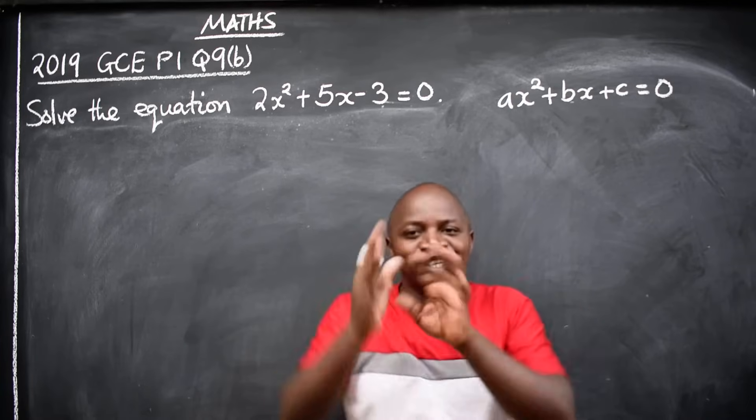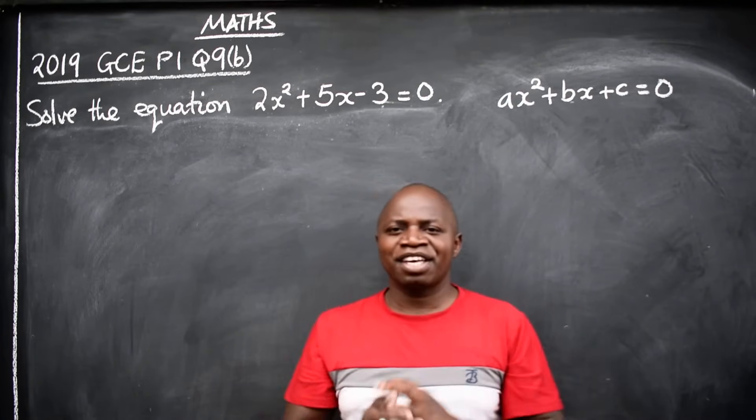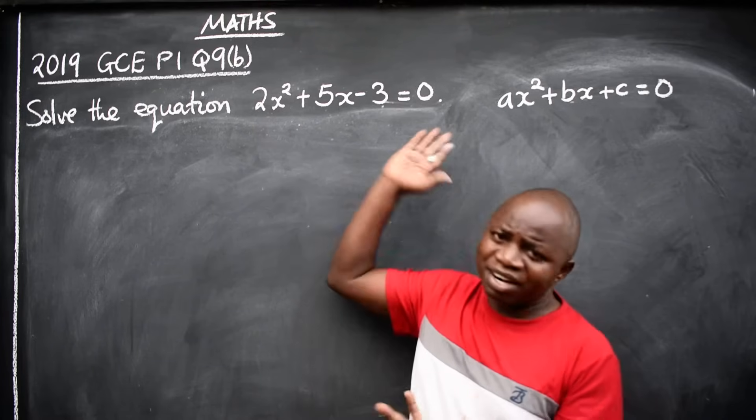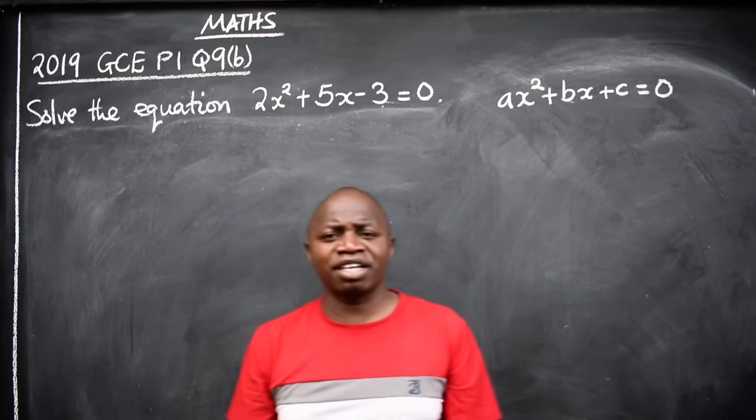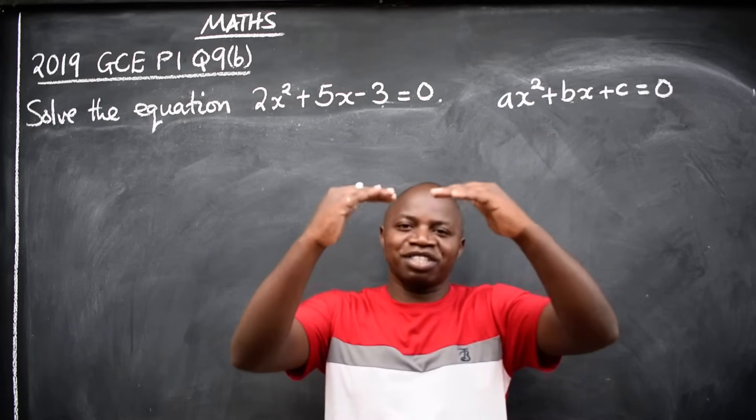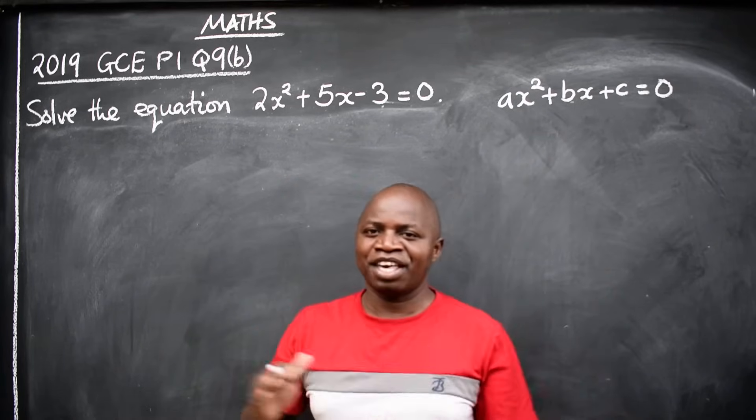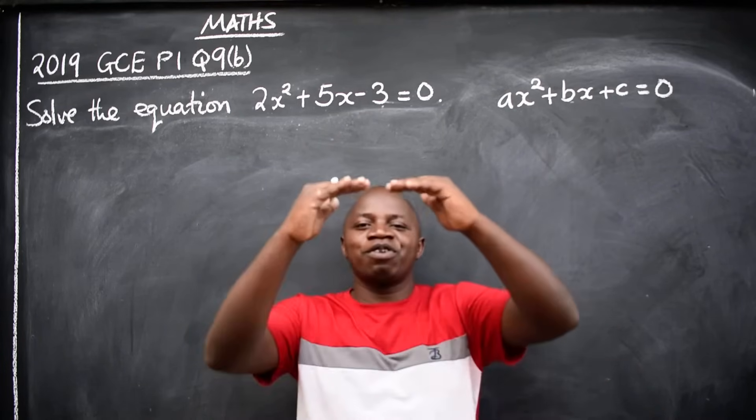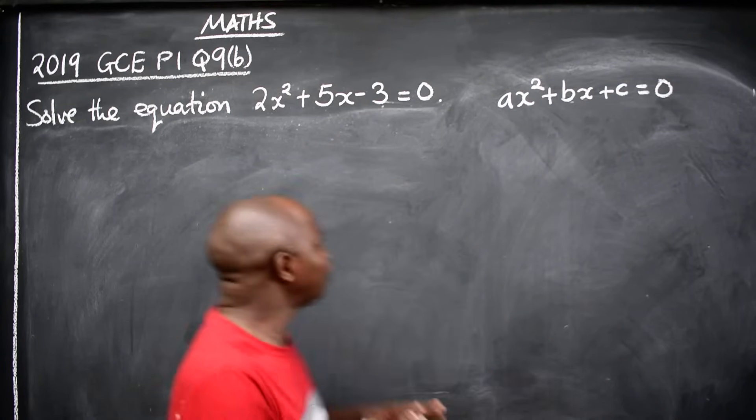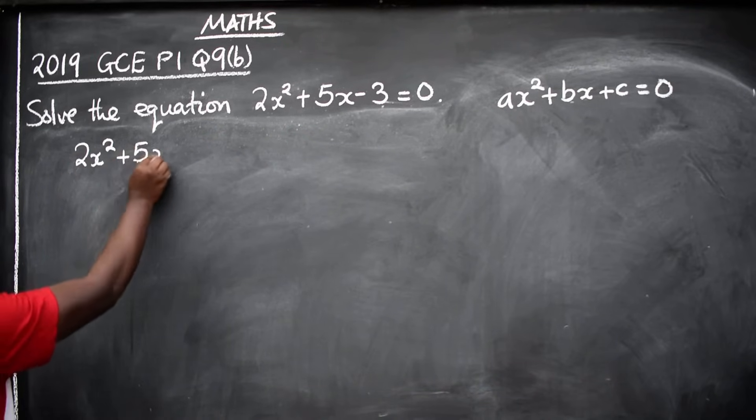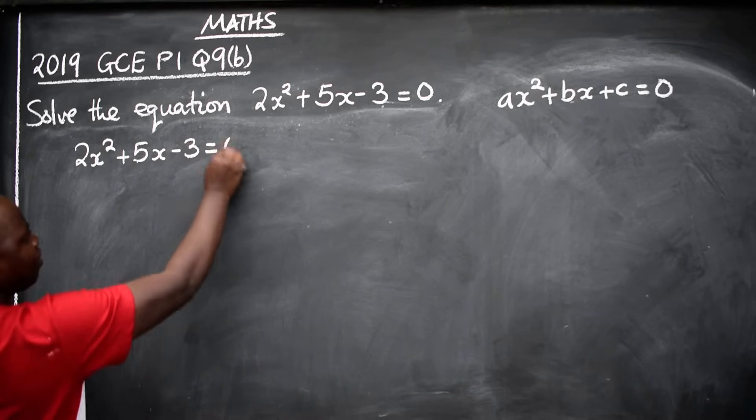It is not always that in an exam test the teacher will give you this quadratic equation in this form. Sometimes they may twist it. So if they twist it, the first step you are going to take is to rearrange until it is in this format. The question I've given you here is already in the format, so we are going to proceed. You copy the question: 2x² + 5x - 3 = 0.